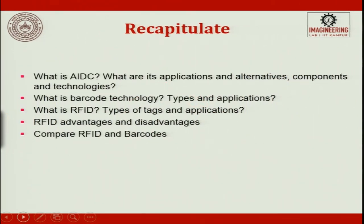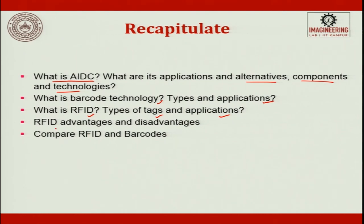To recapitulate what was discussed in this lecture: we covered what is automatic identification and data capture, applications and components, barcode technology and its applications, radio frequency identification including types of tags and their applications, advantages and disadvantages of RFID, a comparison between RFID and barcodes, and other technologies such as magnetic stripes, OCR, and machine vision. We will meet in the next session to discuss more on the course Computer Integrated Manufacturing. Thank you.